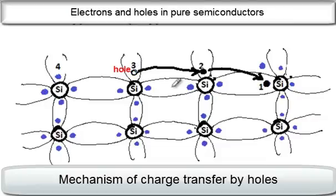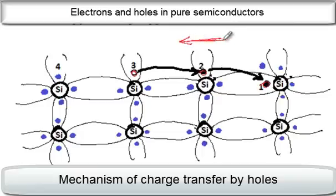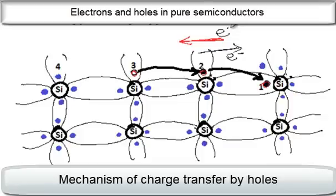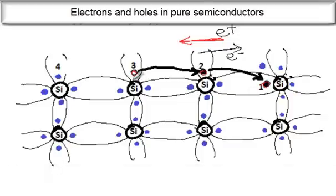This silicon atom is once again going to attract a neighbouring electron, and let's say the electron at position 3 moves in to occupy this vacancy or hole — so effectively we have a hole at position 3 now. This process will continue: the hole moved from position 1 to position 2 and now it is at position 3. Effectively the hole has moved in one direction, and this motion of the hole was due to the motion of the electron in the opposite direction. So we can say that a positive charge or hole moves in the opposite direction to the electrons.